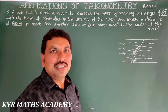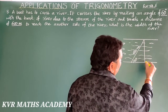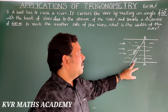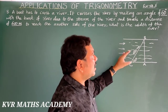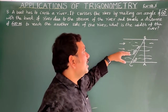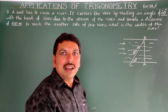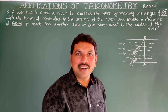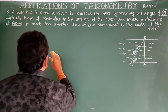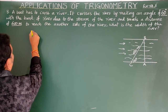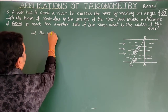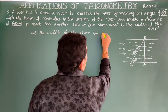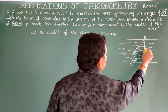Draw the diagram: AB is the width of the river, C is the point where the boat started. Due to the stream, the boat travels at 60 degrees and covers 600 meters (BC = 600m). Let AB = x meters, the actual width of the river.